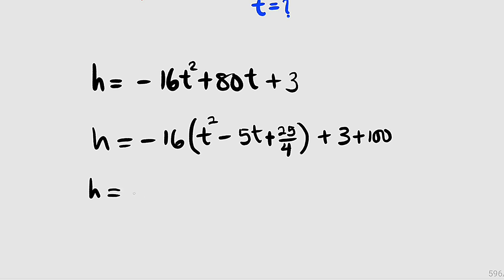-100 + 100 gives us 0, so it's like we have not added anything. h is now equal to -16 multiplied by this perfect square quadratic trinomial. To factorize it, you take t without power, then half the coefficient of t, which is -5/2 all squared. Then to the other side, we have 103. Now the function is transformed into a vertex form.